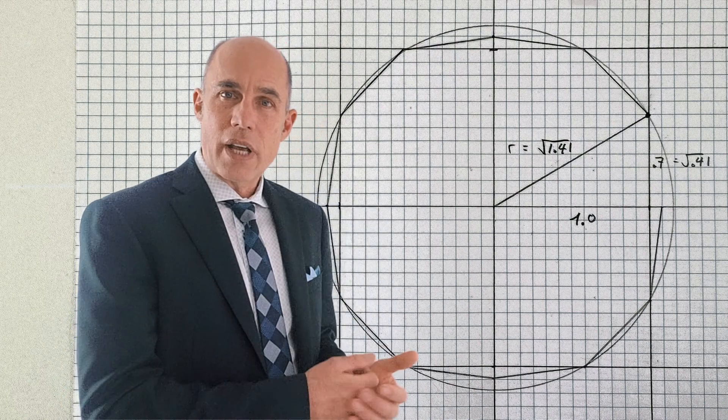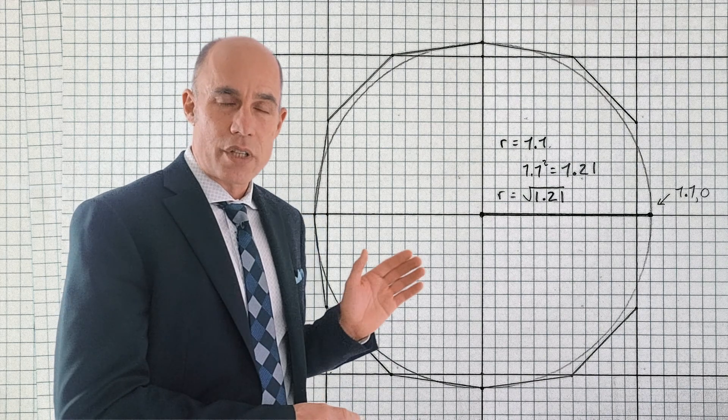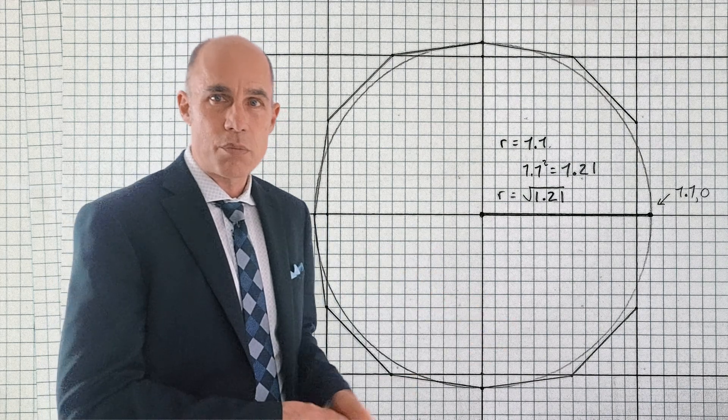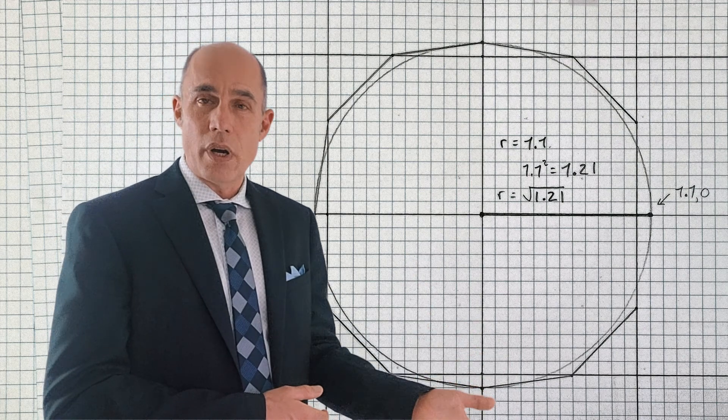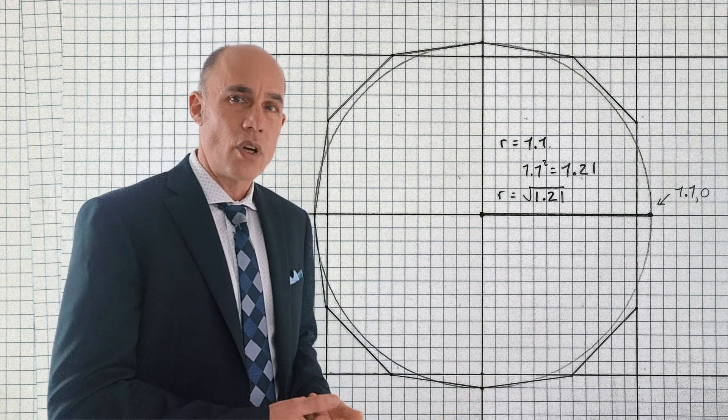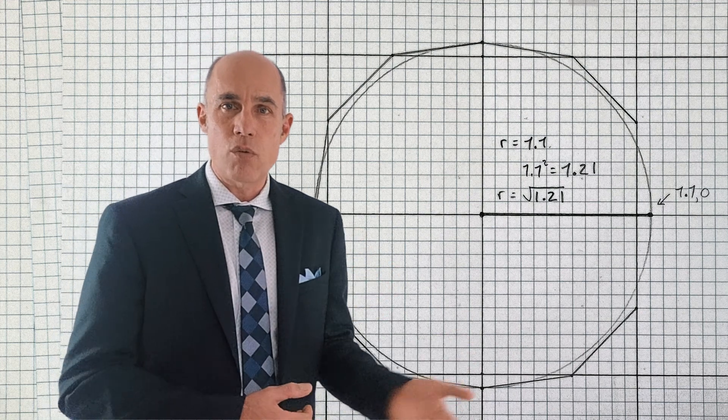And then we're going to look at the inner circle that's defined by the points that are on the x and y axis. So these points, the radius is 1.1. So 1.1 squared is 1.21. So the radius of that circle is √1.21.